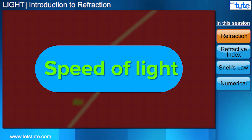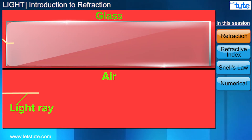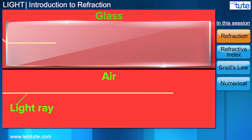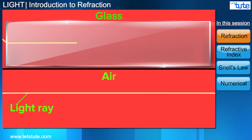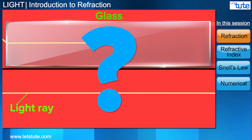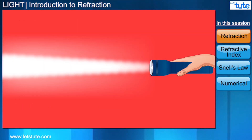It's because of the speed of light. Let me explain. Light has different speeds in different mediums. For example, the speed of light in air is more than the speed of light in glass. But this still does not explain why the light bends the way it does. Well, for that we need to look at waves of light.